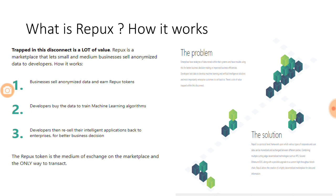The simple problem that RepuX is solving can be very easily explained. If you were to talk about data, analytics, and machine learning, there is a lot of desynchronized approach being deployed when these things are executed currently. You have a lot of organized and unorganized sectors generating data, but only part of it is utilized by developers to come up with machine learning algorithms to solve problems and train their models.